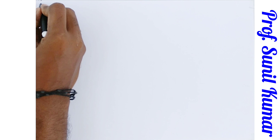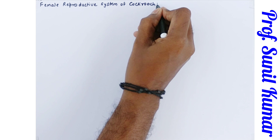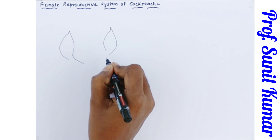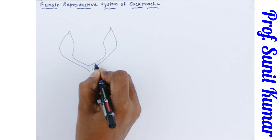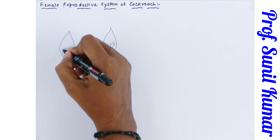Now coming to the most important part — the female reproductive system of cockroach. All other females on earth have ovaries, oviduct, and vagina; the same structures are present in the cockroach, but the structure will be a bit different. The structure I am drawing now is the ovary, and the two ducts are called the oviduct. The ovarioles are the parts of the ovary that help in the production of eggs.